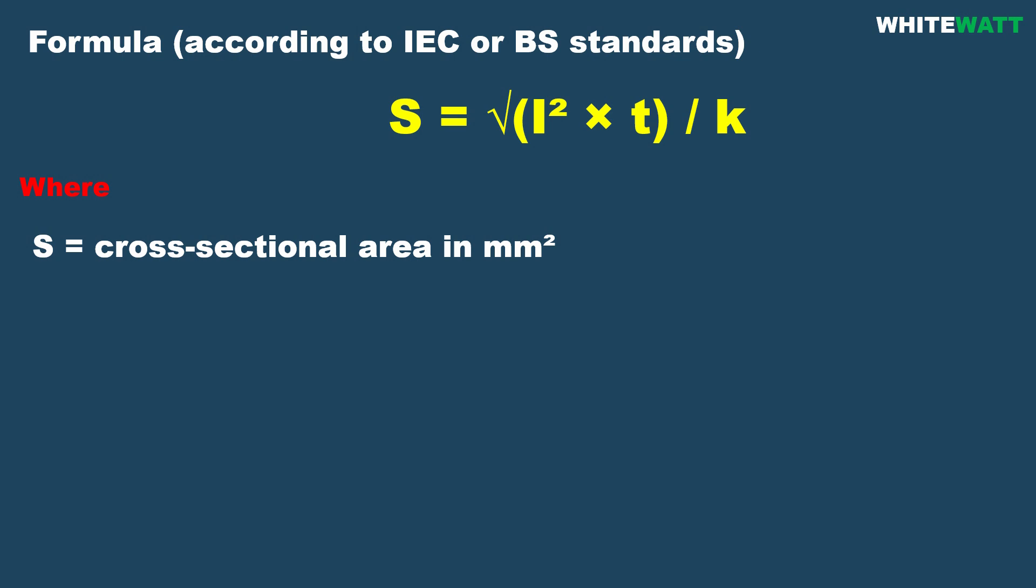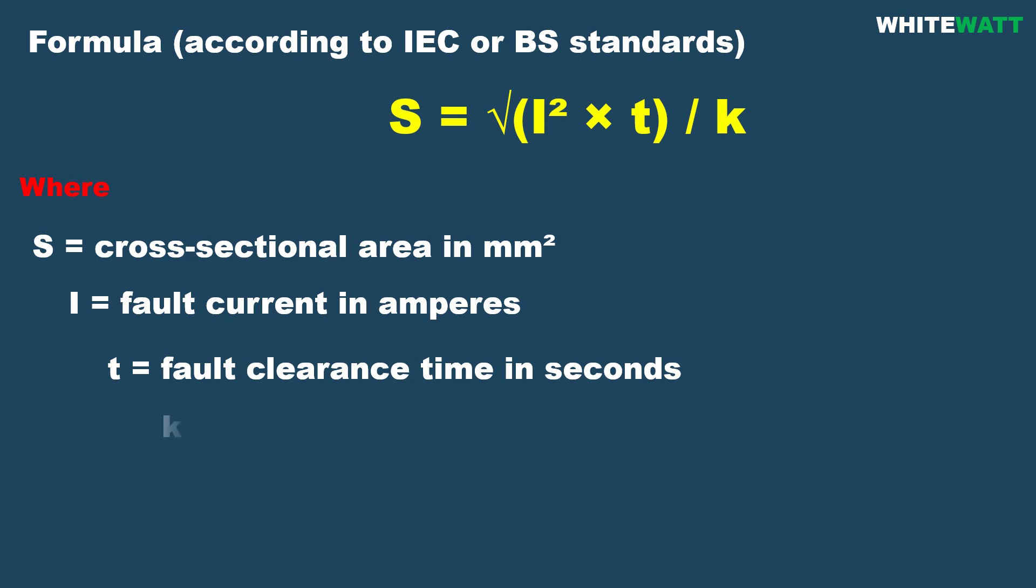K is the material constant. For copper, k value is 143. For aluminium, k value is 94.